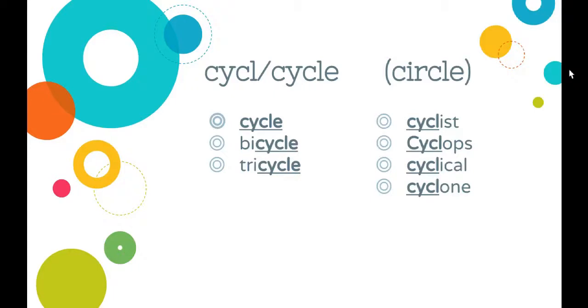Cyclist, Cyclops, cyclical, and cyclone—I would just remember that these words have the C-Y-C-L root with them. You're just going to have to remember bicycle, tricycle, cycle will have C-Y-C-L-E in them, and the rest of them just have that C-Y-C-L.